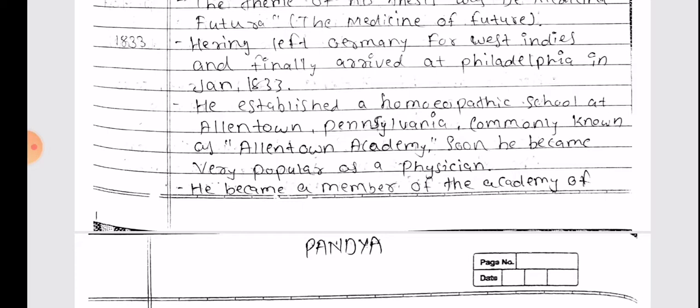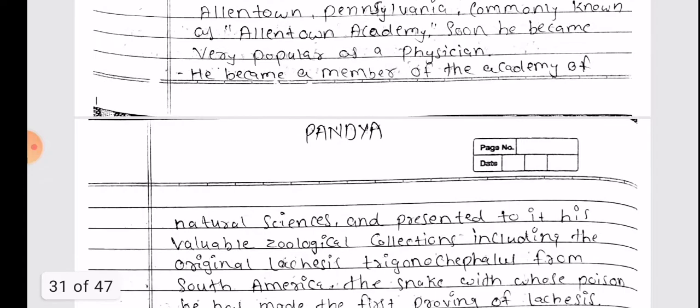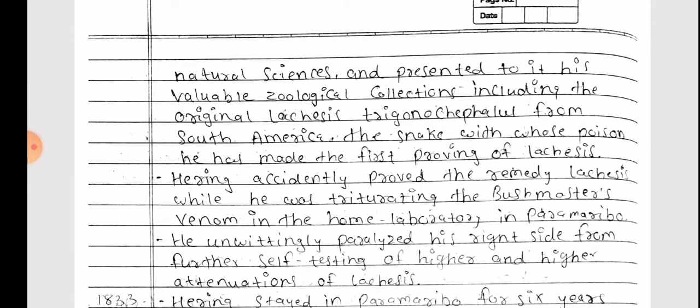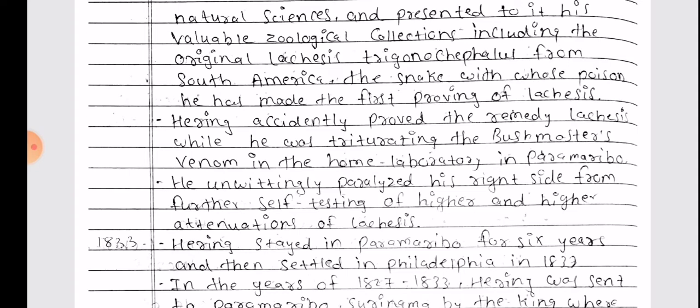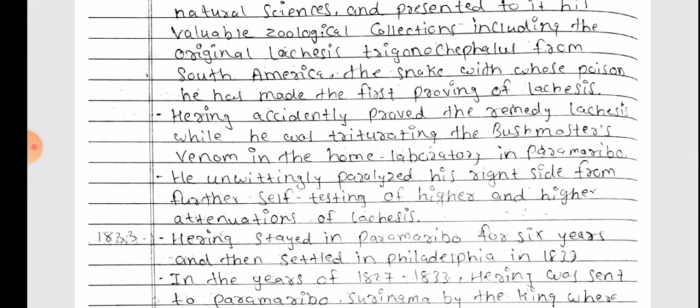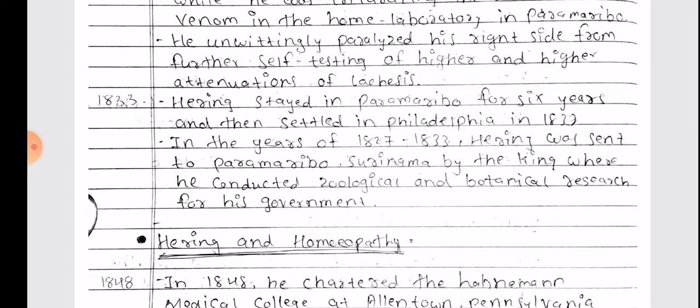Soon he became very popular as a physician. He became a member of the Academy of Natural Sciences and presented to it his valuable zoological collections, including the original Lachesis trigonocephalus from South America — the snake with whose poison he had made the first proving of Lachesis. Hering accidentally proved the remedy Lachesis while triturating the Bushmaster's venom in his home laboratory in Paramaribo. He unwittingly paralyzed his right side from further self-testing of higher and higher attenuations of Lachesis.